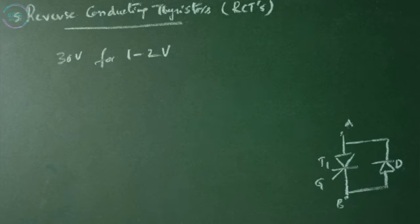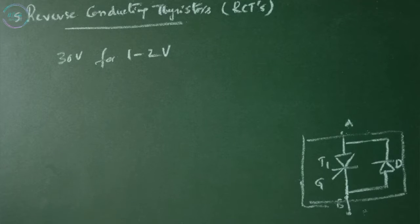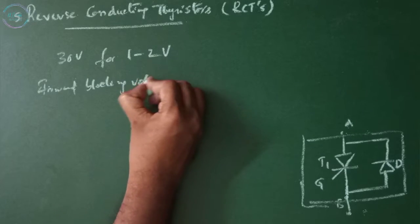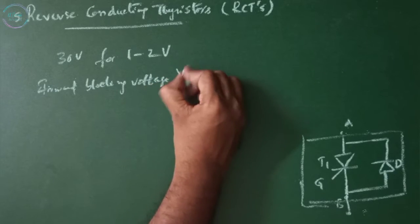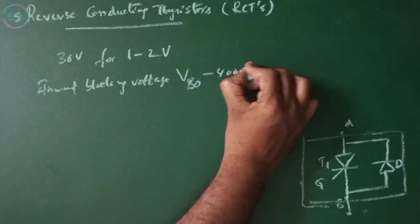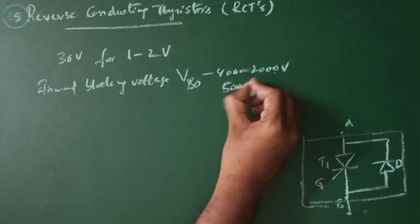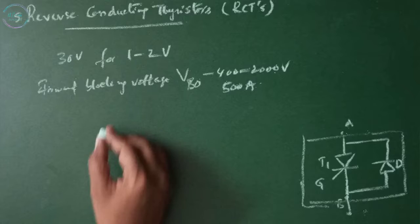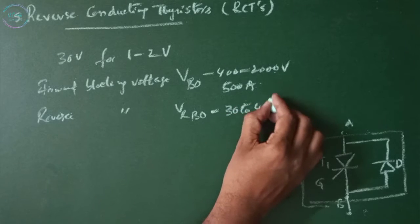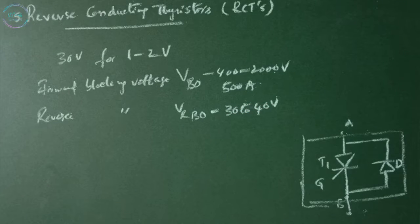It may be considered as a thyristor with a built-in anti-parallel diode as shown in this figure. Forward blocking voltage VBO is 400 to 2000 volts and the current rating is up to 500 amps. Reverse blocking voltage is typically 30 to 40 volts. Since the ratio of forward current to reverse current is fixed for a given device, their applications will be limited to specific circuit designs.